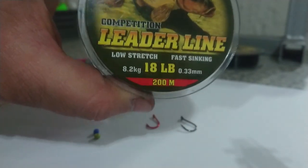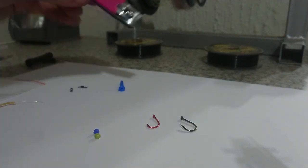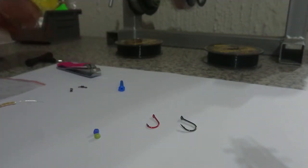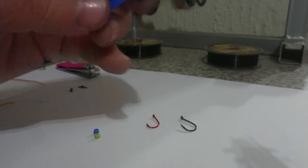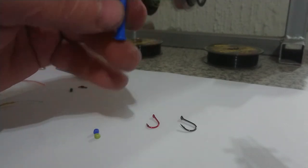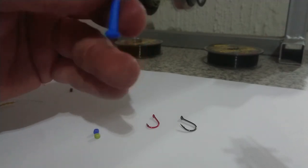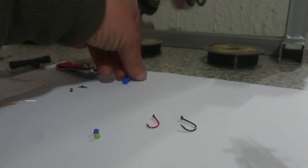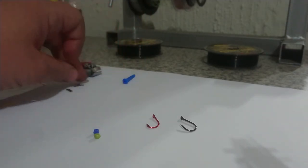Usually when you make rigs, this is your strong line or a stronger line than your hook link. You're going to need scissors, side cutters, or nail clippers. You're going to need a sinker. I'm just going to use this for demonstration purposes. This is just a plastic sleeve that the sinker slides onto.